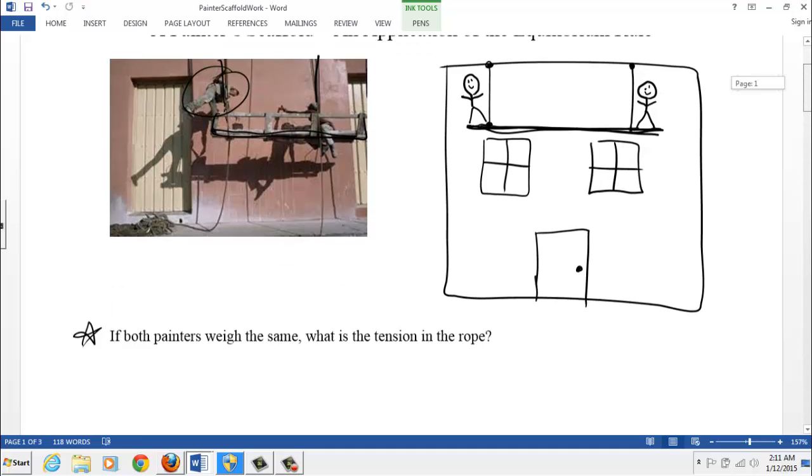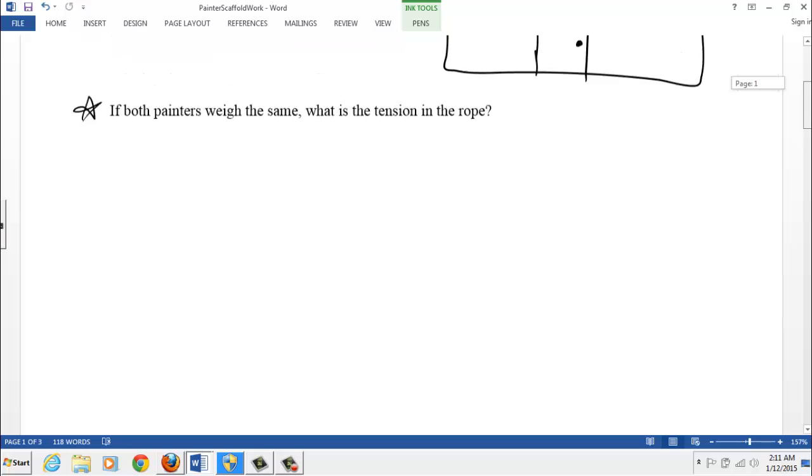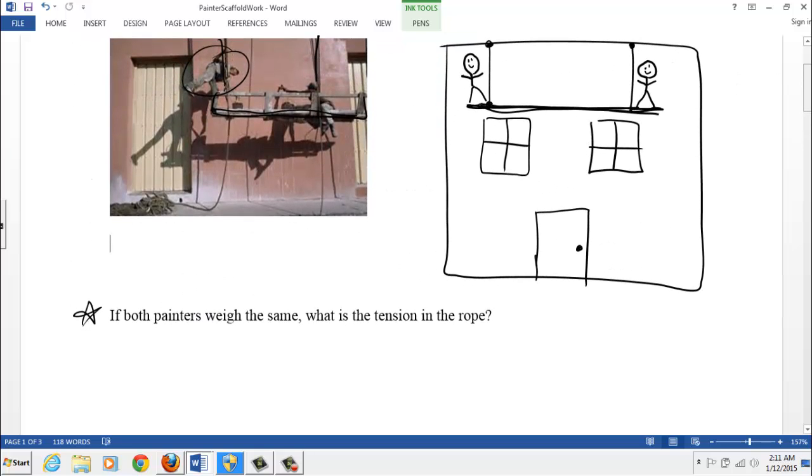If that's the case, we can ask a question: if both painters weigh the same, what is the tension in the rope? Fair question, fair exam type question. So how do we tackle this? Well, use the equilibrium rule. Equilibrium rule says if the velocities are not changing, then all the forces must be canceling out.